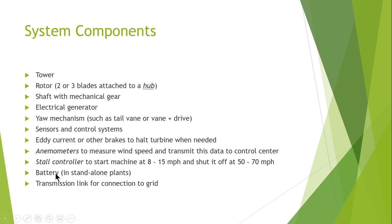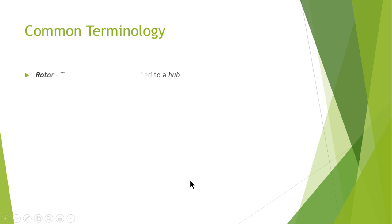There are also batteries — standalone parts used to store the excess amount of power generated by the windmill so that we can use it when there is no supply of wind. Then there is a transmission link for the connection to the grid.